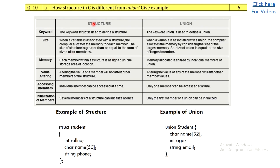There is a question asking for the difference between structure and union with an example. Wherever an example is asked, give a code snippet. You can differentiate structures and unions based on keyword, size, memory allocation, value altering, accessing members, and initialization of members. Write a neat comparison table based on these parameters, and also write a small example showing how to write a structure and how to write a union. This will fetch good marks.